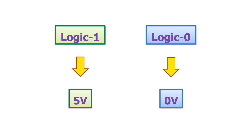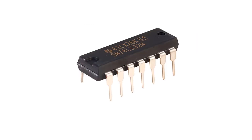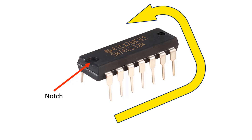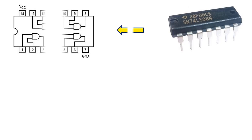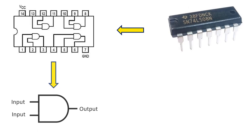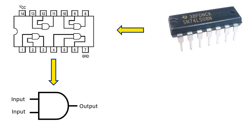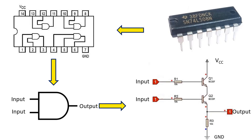Now let's look at how to number the pins of the logic gates. When we hold the IC to read the text on it, there is a notch on the left side. The pins are numbered starting from this notch. Logic gate ICs are generally 14 pins. For example, when we look at the internal structure of the 7408 IC, we see that it consists of 4 AND gates, with 2 inputs and 1 output. Inside an AND gate, there is a circuit consisting of 2 BJT transistors and resistors.